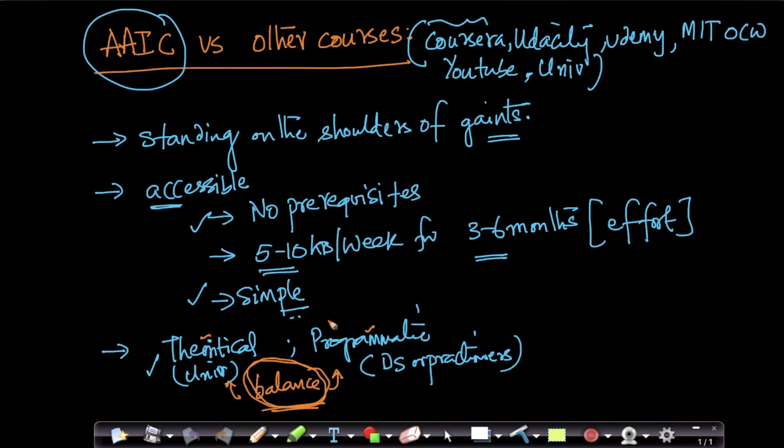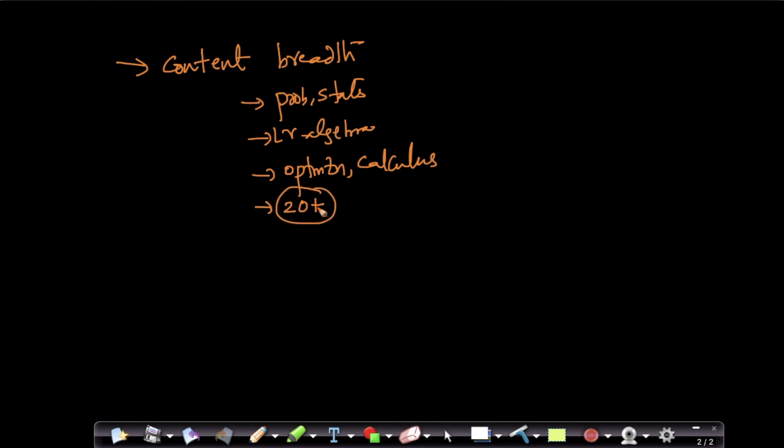The other important thing is our course content is very very wide. Our content breadth is very very wide. We cover everything from basics of probabilities, stats, linear algebra, all the stuff that are needed for machine learning, basics of what optimization is, even some basics of calculus. We cover things like what does derivative of a function mean geometrically.